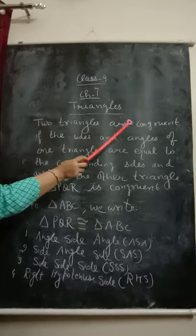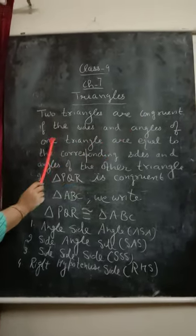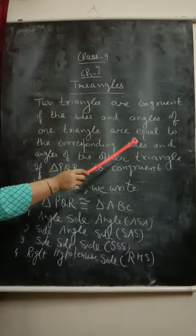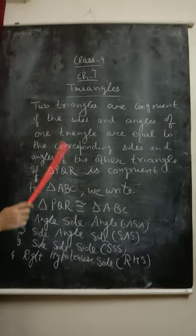Two triangles are congruent if the sides and angles of one triangle are equal to the corresponding sides and angles of the other triangle.